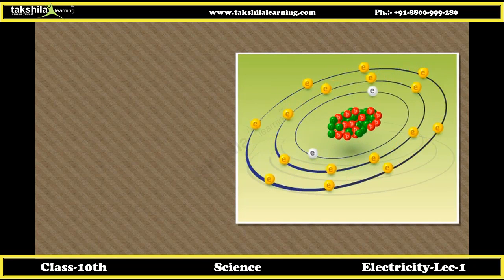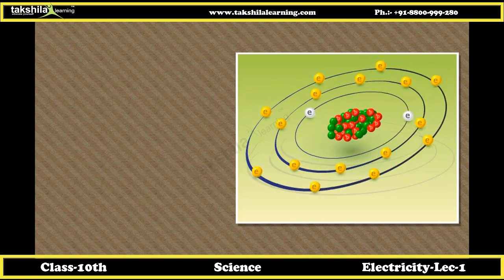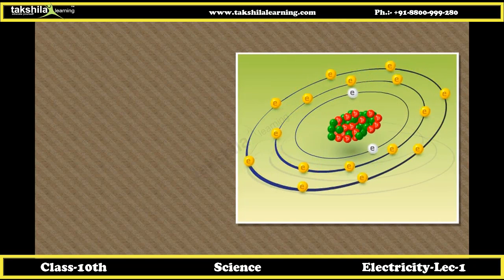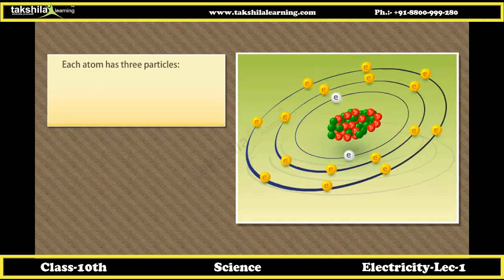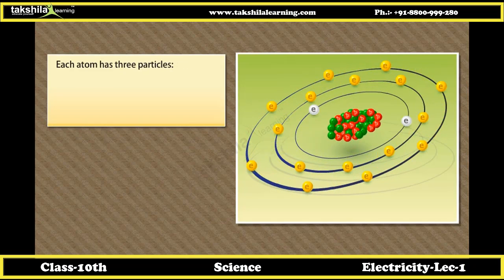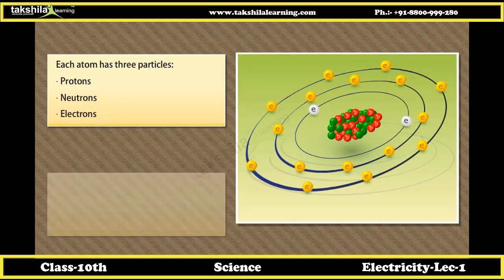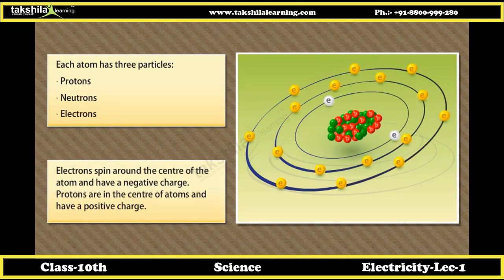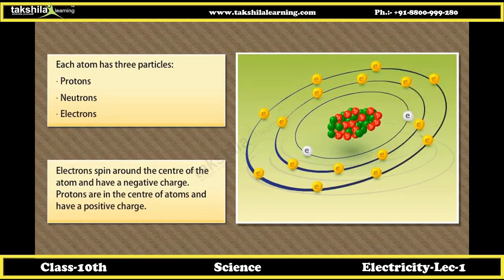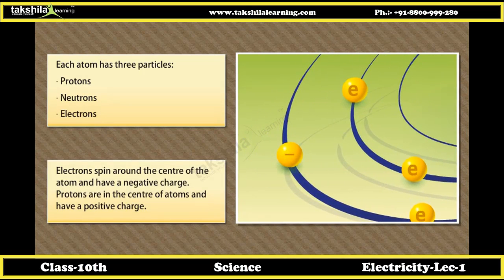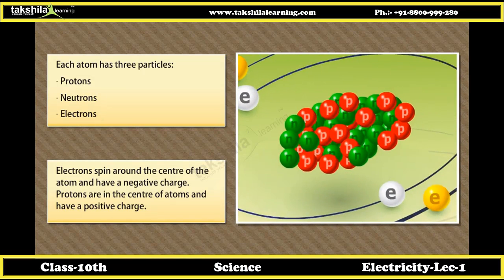Electric current and circuit. All things around us are made up of atoms. Each atom has three particles: protons, neutrons, and electrons. Electrons spin around the center of the atom and have a negative charge. Protons are in the center of atoms and have a positive charge.